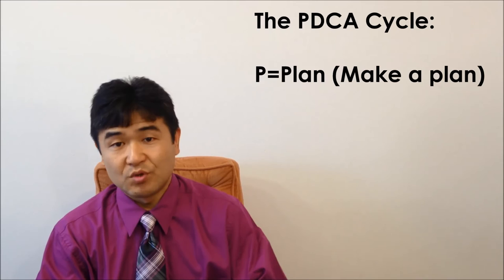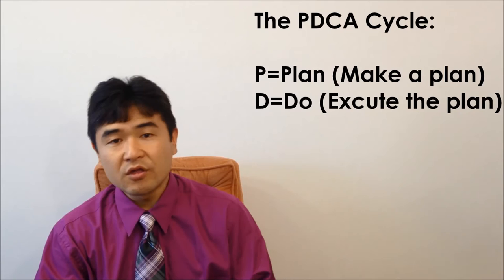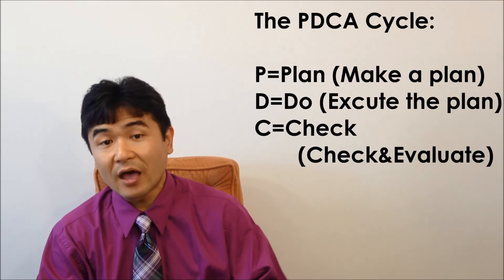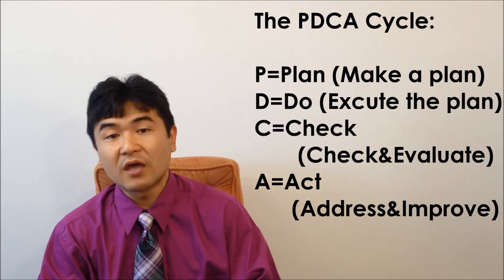P is for plan. Before whatever you do, first prepare and make a plan. D is for do. Execute the plan. C is for check. Evaluate how well you achieved your plan at some point. And A is for act. Address or improve the situation based on the evaluation.